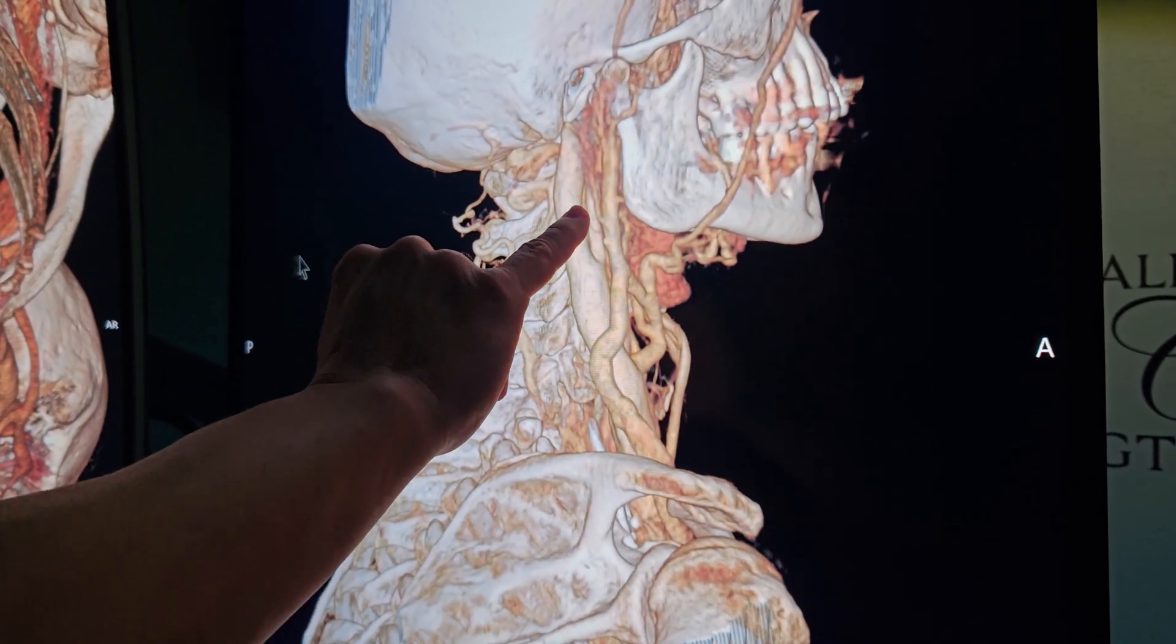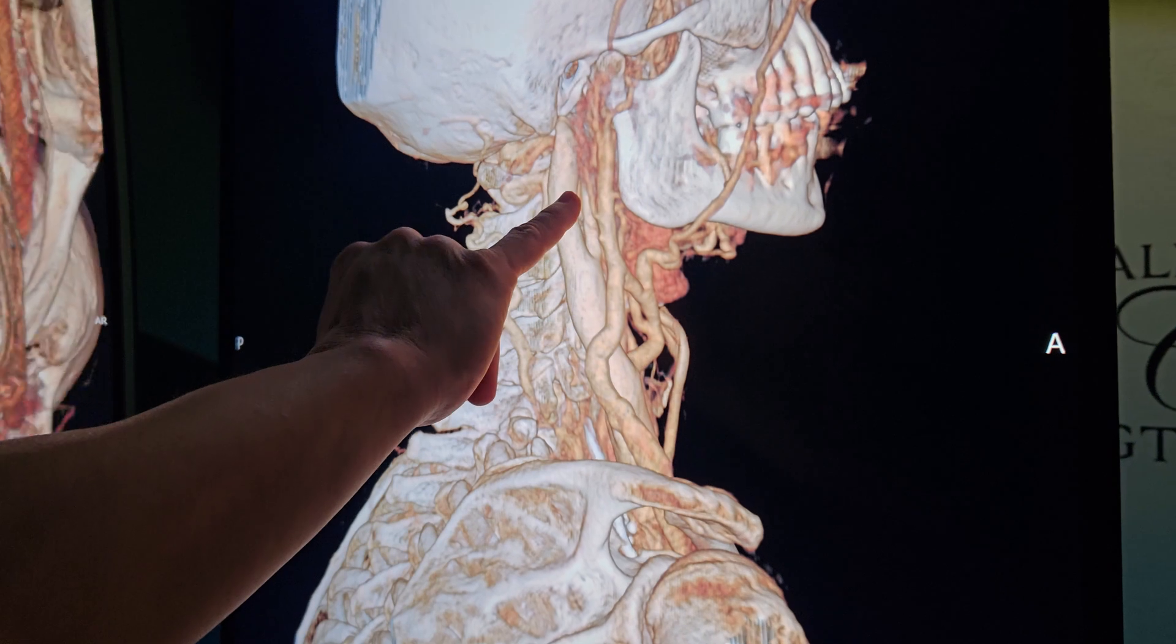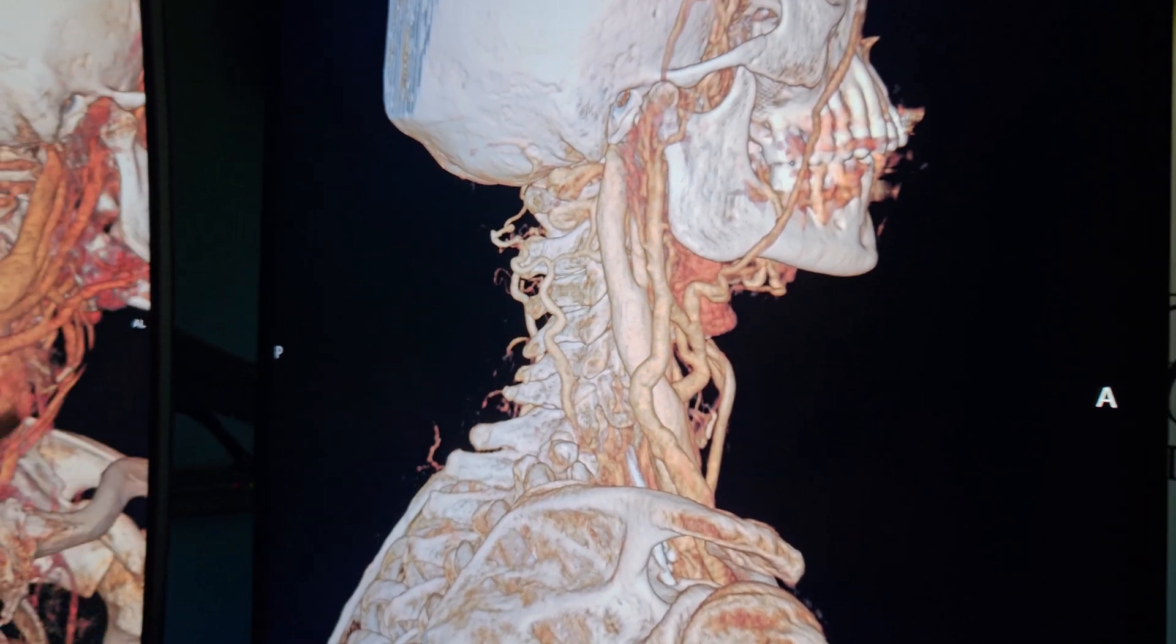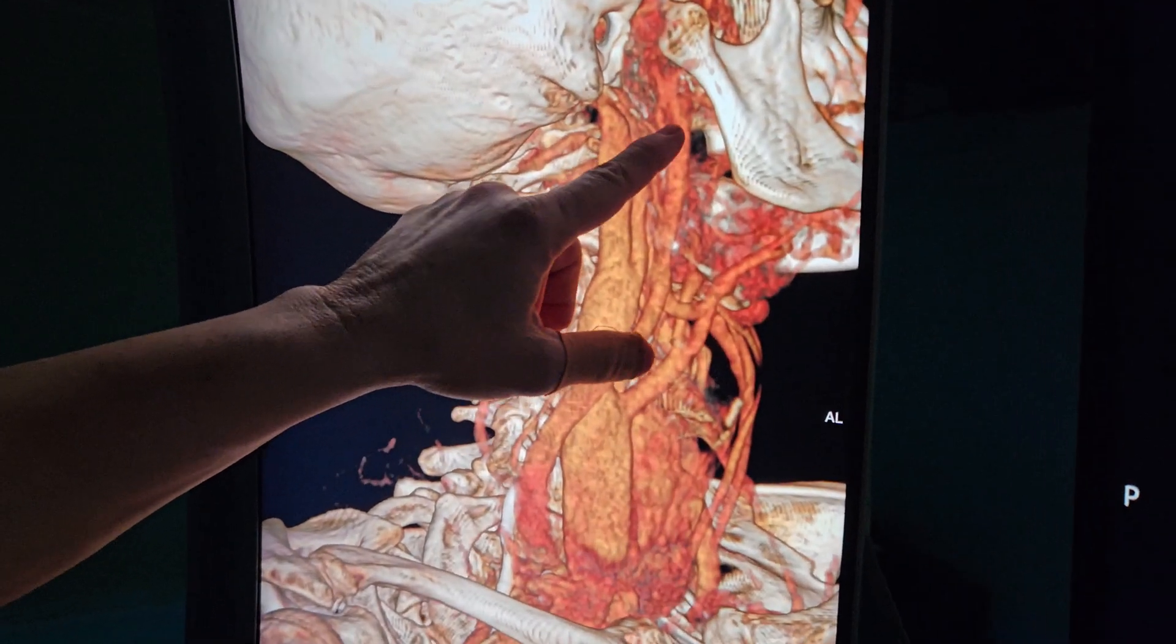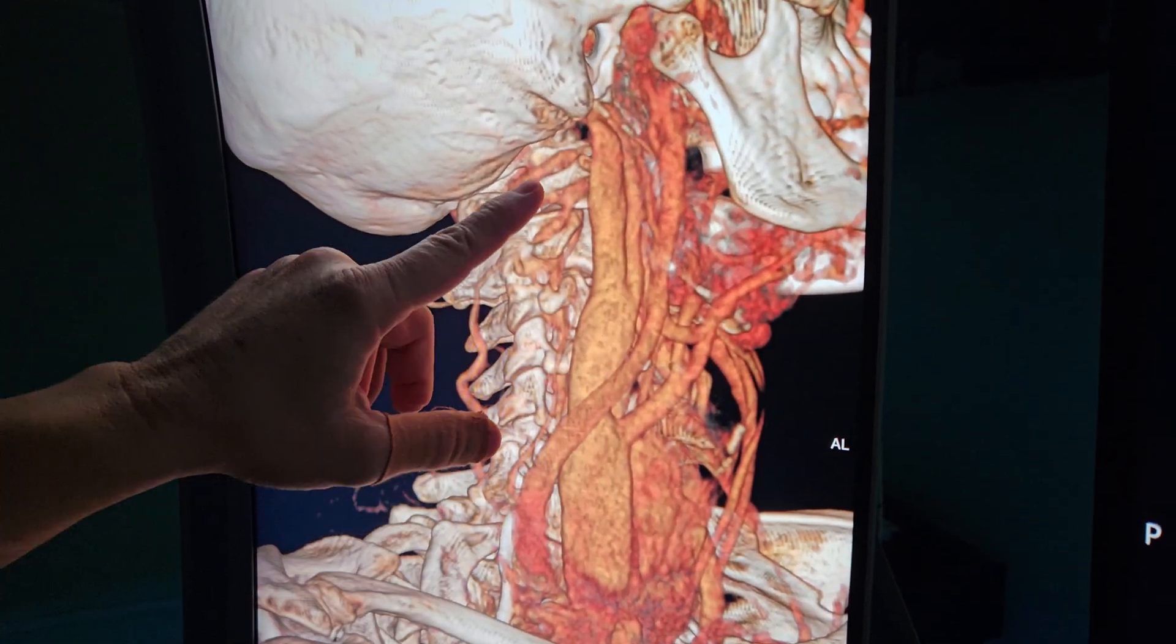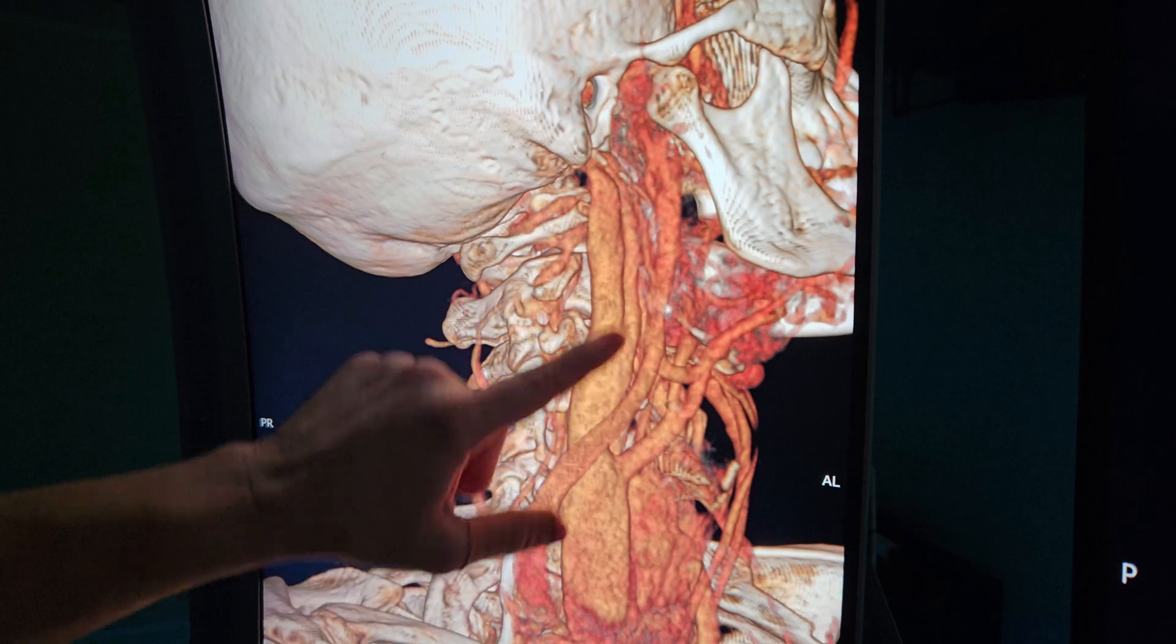We did have her jut her jaw forward and when she juts her jaw forward, here you can see this, it does open up that plexus of veins and looks like it gives a little better flow. We tried to document that with ultrasound today.